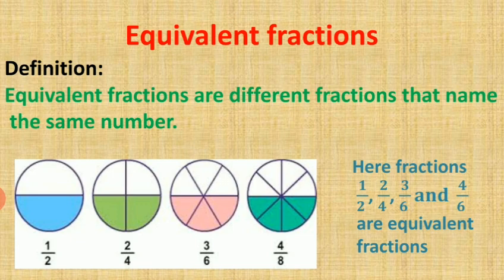Next topic is equivalent fraction. The definition of equivalent fraction is: equivalent fractions are different fractions that name the same number. Here you can see four circles — all four circles are whole but divided into different parts. The first circle is divided into two parts and one part is shaded, so its fraction is one by two.